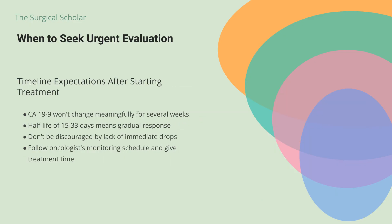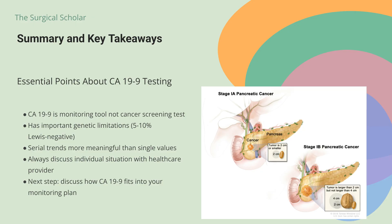After starting chemotherapy for pancreatic cancer, you typically won't see meaningful changes in CA-19-9 for several weeks, given its half-life of 15 to 33 days. Don't be discouraged if levels don't drop immediately — give treatment time to work and follow your oncologist's monitoring schedule. CA-19-9 is a valuable monitoring tool when used correctly, but it's not a cancer screening test and has important genetic limitations. Discuss with your oncologist how CA-19-9 fits into your specific monitoring plan and what changes would be clinically significant.